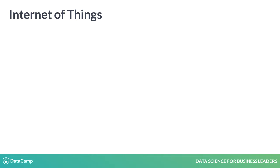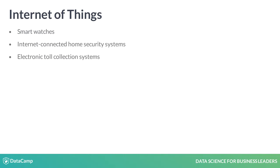IoT refers to gadgets that are not standard computers but still have the ability to transmit data. This includes smartwatches, internet-connected home security systems, electronic toll collection systems, building energy management systems, and much more. IoT data is a great resource for data science projects.